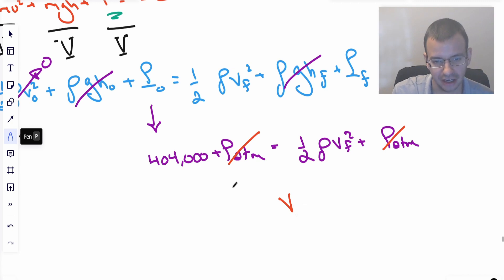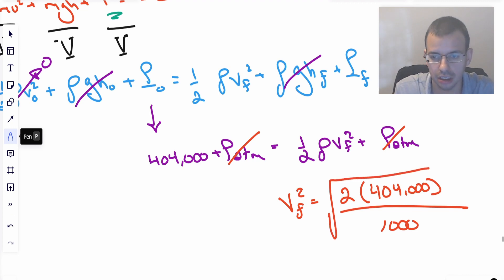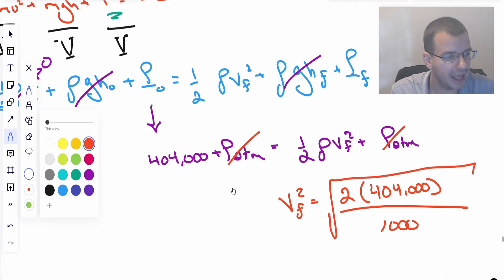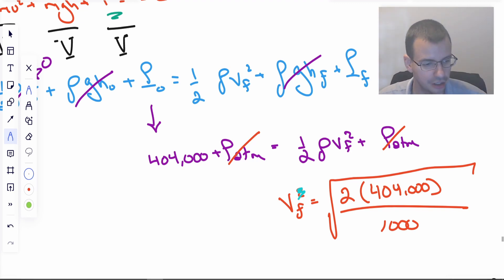So then we want velocity of the water, which is going to be 2 times 404,000 divided by the density of the water. Density of the water is going to be 1,000 kilograms per cubic meter. And I took the radical there. I know terrible boardmanship. I apologize. It should be more consistent on that. So the idea is you're never supposed to write something on a board that a student can't easily do on their notes. So it kind of ruins it. You get what I'm saying.